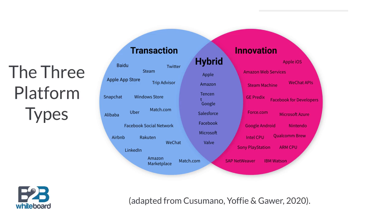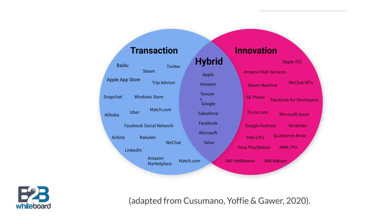Let's examine the three types of digital platforms that have emerged over the last 20 years. First up are transaction platforms, which are online marketplaces that allow people to share information, buy, sell and access a variety of goods and services.